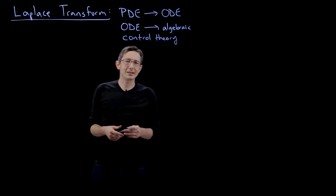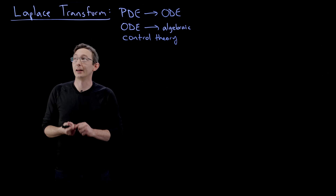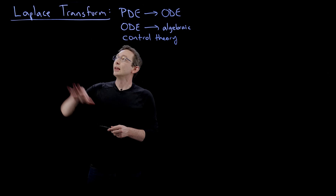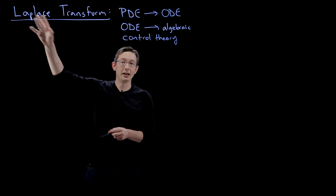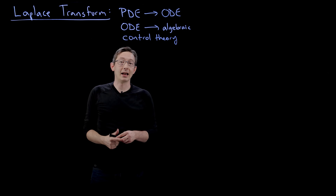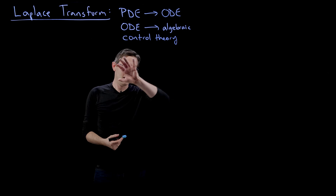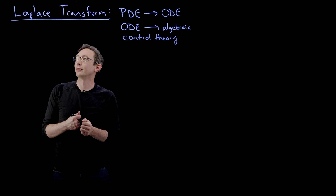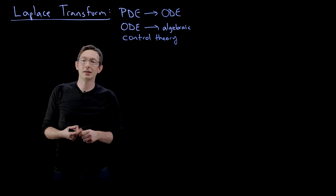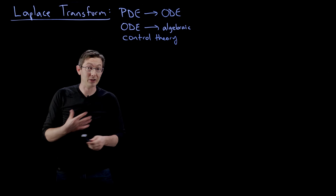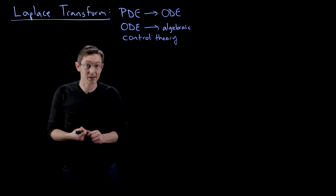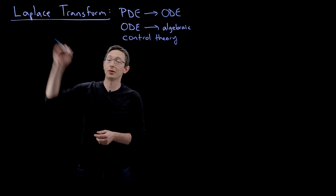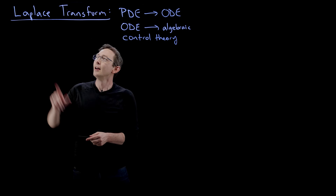Laplace is one of my absolute favorite French mathematicians. He was the son of a peasant farmer and went on to have his name on the Eiffel Tower. That's one of the things I love about the French — they revere their great thinkers, mathematicians, and scientists, and Laplace was truly one of the greatest.